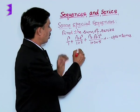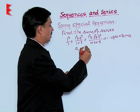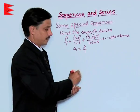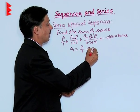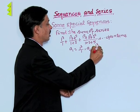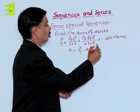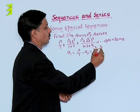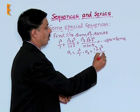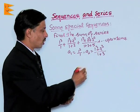Now, if you observe its first term, it is 1 cube upon 1. The second term is sum of cubes of first two natural numbers upon sum of first two odd numbers.